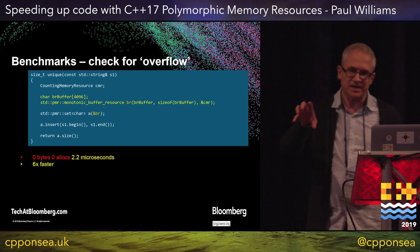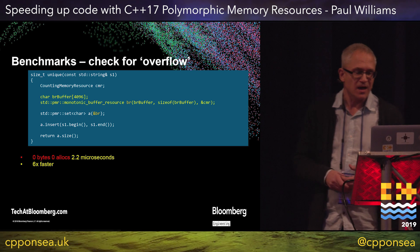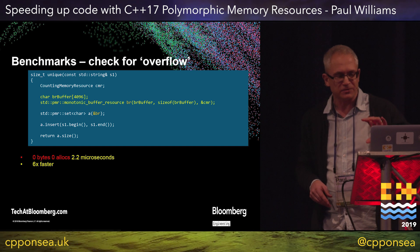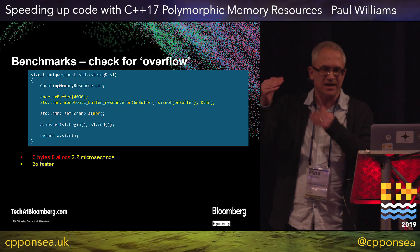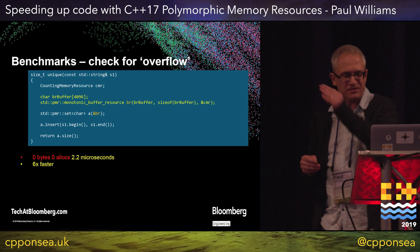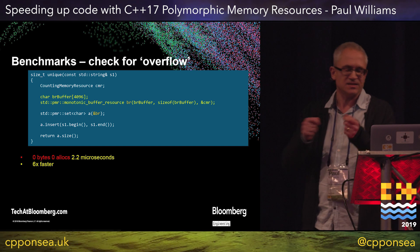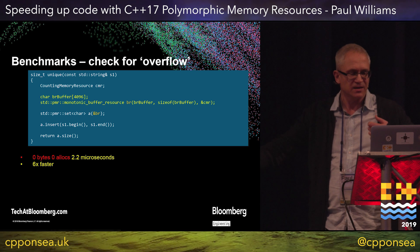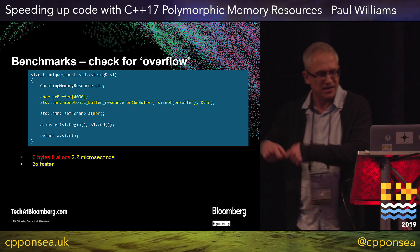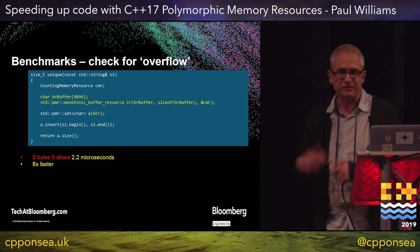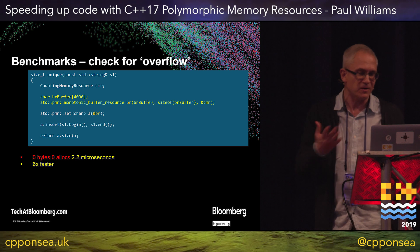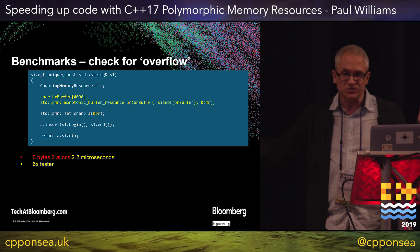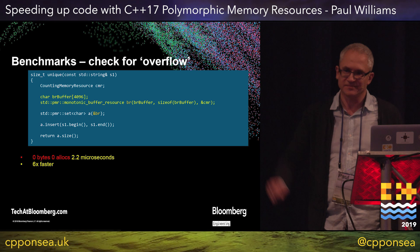There are various allocators that come with the standard — some pools, some thread-safe, some not thread-safe. You can actually cascade these together. For example, you can have your counting allocator plugged into one of these monotonic buffer resources on the stack, and then you can actually use that in a pool. So you've now got a thread-free pool that you can use for all the allocations. Please try it. Thank you very much.